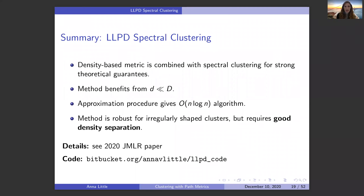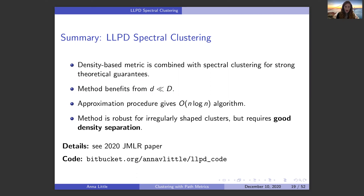To summarize Part 1 on LLPD spectral clustering: we use a density-based metric combined with spectral clustering for strong theoretical guarantees. The method benefits from having intrinsic dimension much smaller than ambient dimension, and there's an approximation procedure giving an order n log n algorithm. The method is very robust for irregularly shaped clusters but requires very good density separation — if clusters can run into each other, things will go poorly. The 2020 JMLR paper and code are available.